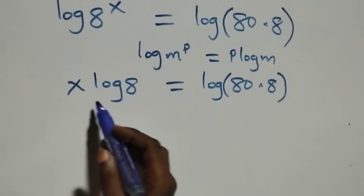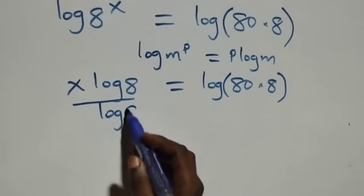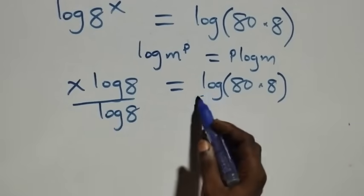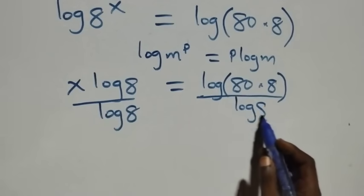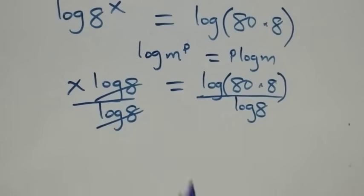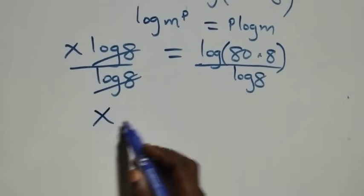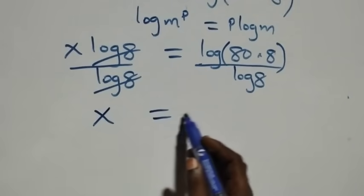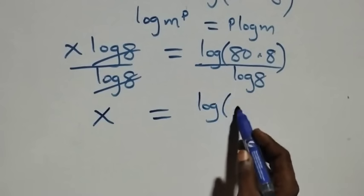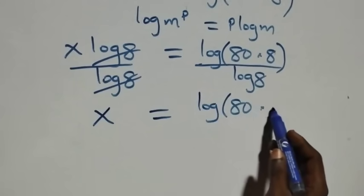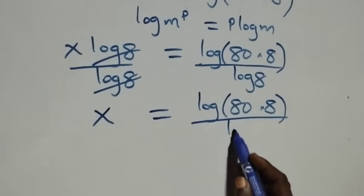The next step: we divide both sides by log 8. We divide this side by log 8 and also divide the other side by log 8, which means log 8 cancels each other, and we are left with x equals to log of 80 times 8 over log 8.